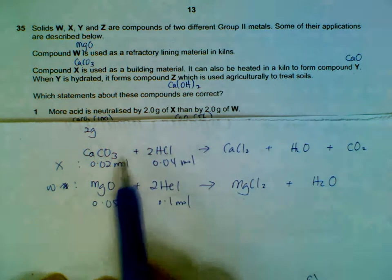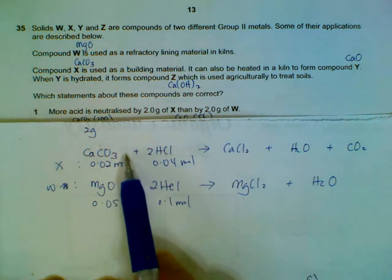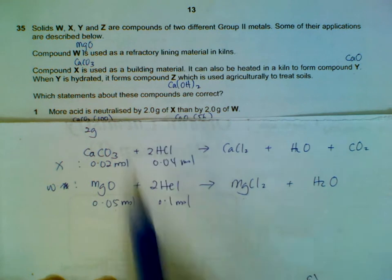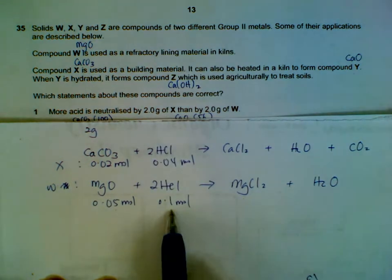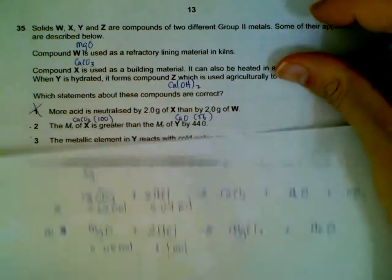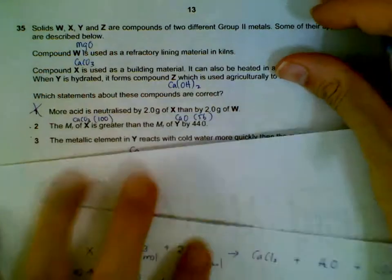So more acid is neutralized by X is not correct, as suggested by the statement. More acid should be neutralized by W. That makes statements 2 and 3 correct.